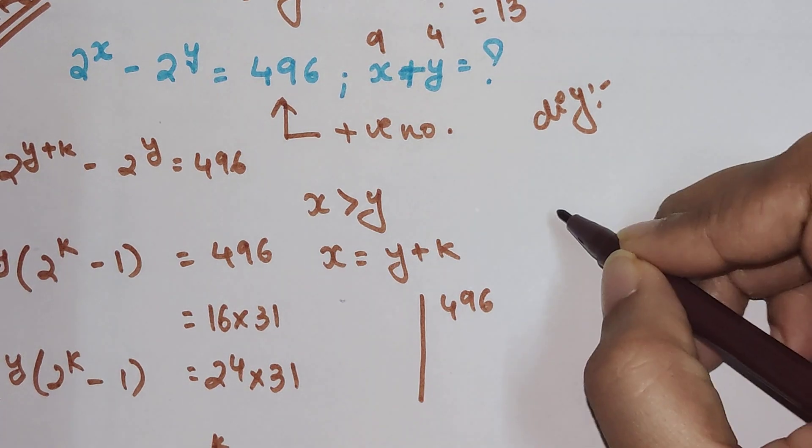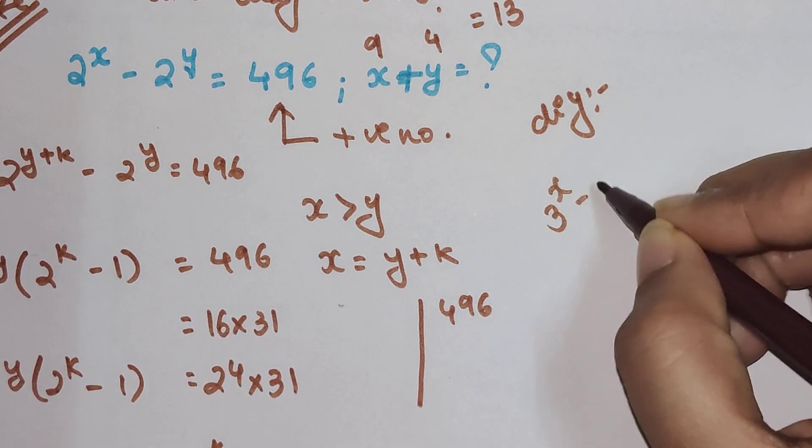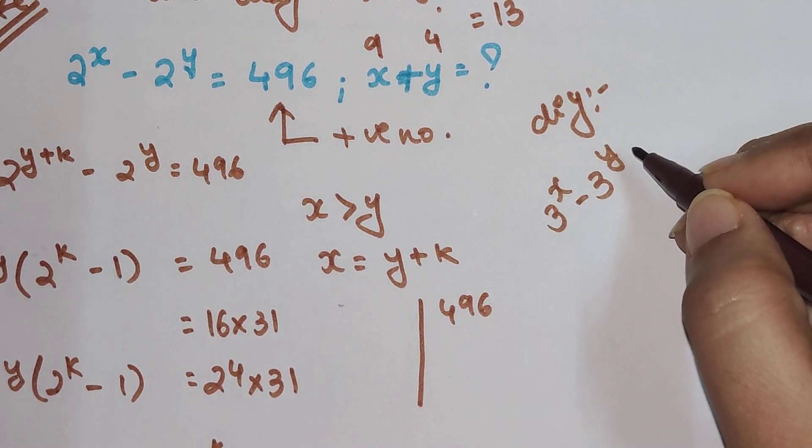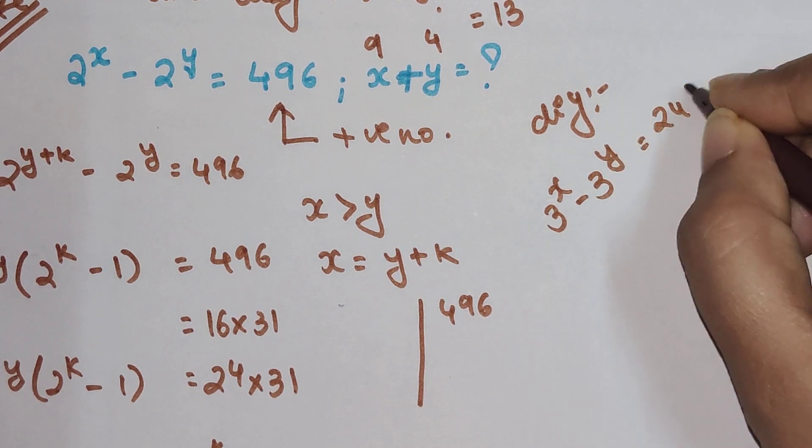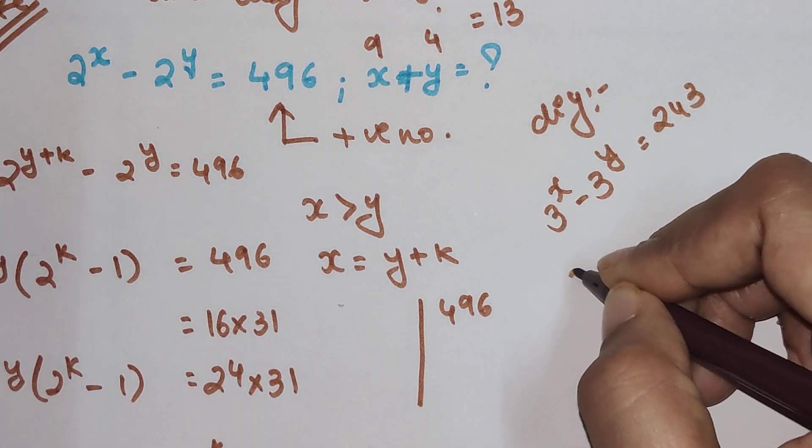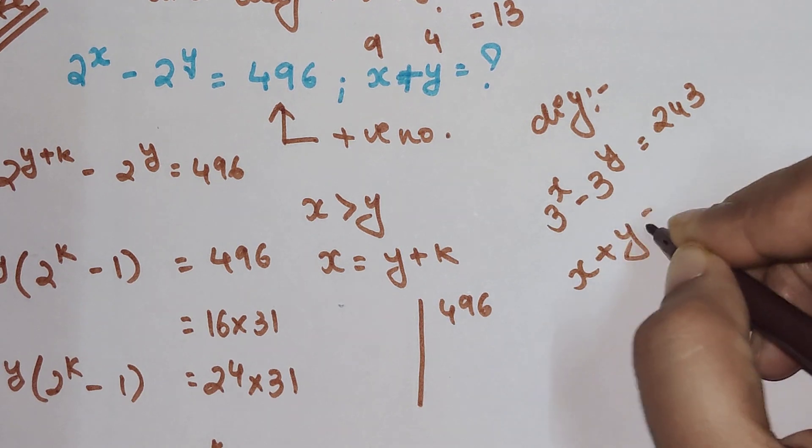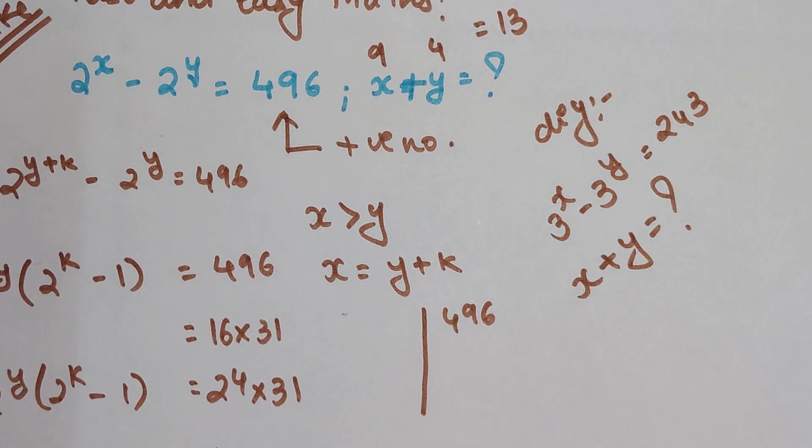Now coming to your DIY, you have to tell me: 3 raised to x minus 3 raised to y equals 243. You will have to tell me what is the value of x plus y. Do let me know your answers in the comment section.